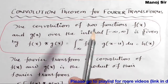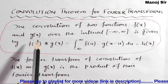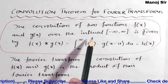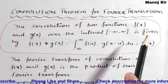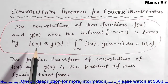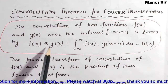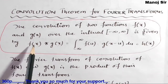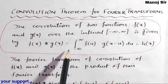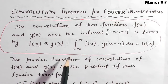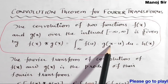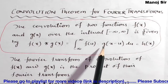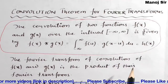The convolution of two functions f(x) and g(x) over the interval minus infinity to plus infinity is given by: convolution of f(x) and g(x) equals integration from minus infinity to plus infinity of f(u) into g(x minus u) du. On solving this you will get a function of x, which is known as h(x).